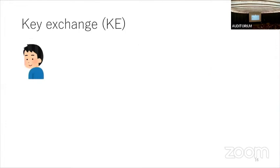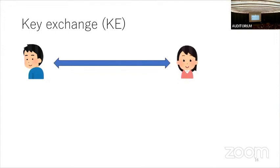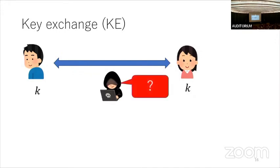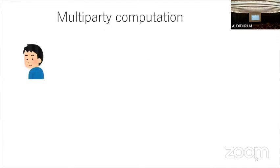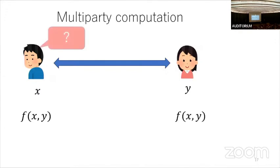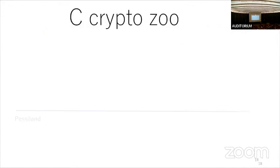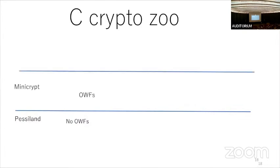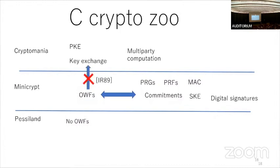Key exchange is a protocol between two people, Bob and Alice. They exchange messages over a public channel and finally share a secret key K, but an adversary who can access the public channel cannot learn K. Multi-party computation: Alice and Bob each have inputs x and y, they communicate, and finally evaluate f(x, y), but neither knows the other's input. So I've now explained almost all classical primitives.